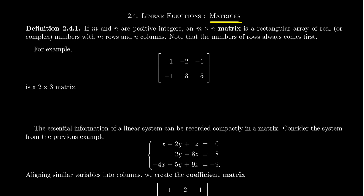So what is a matrix? The simple answer is a matrix is a rectangular array of numbers. More precisely, if we have two positive integers m and n, we say that an m by n matrix is a rectangular array of real or maybe complex numbers with m rows and n columns. An illustration of such a thing you can see right here. This is an example of a 2 by 3 matrix.